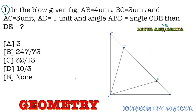I hope you have paused the video and tried the question. In this question we have angle ABD equal to angle CBE. This is termed as the isogonal property of a triangle. When two angles are the same, we call this the isogonal property of a triangle.